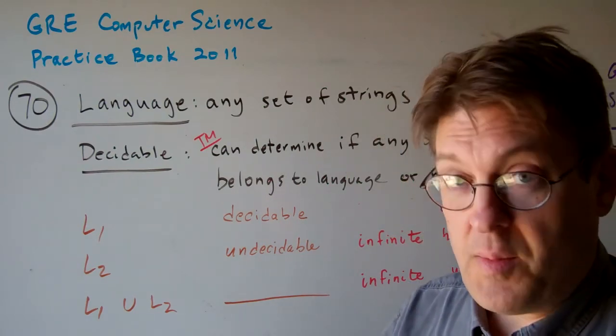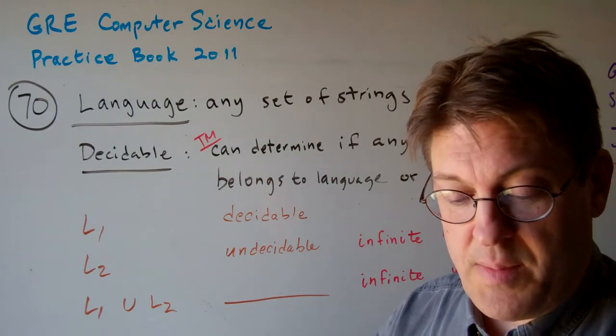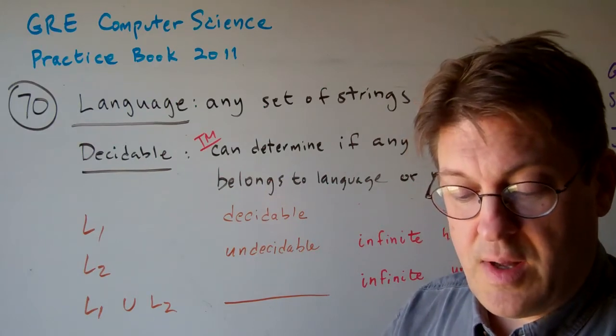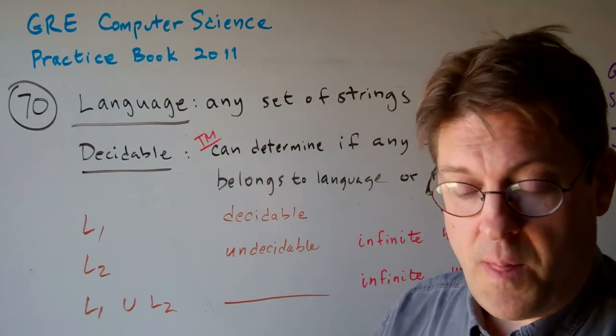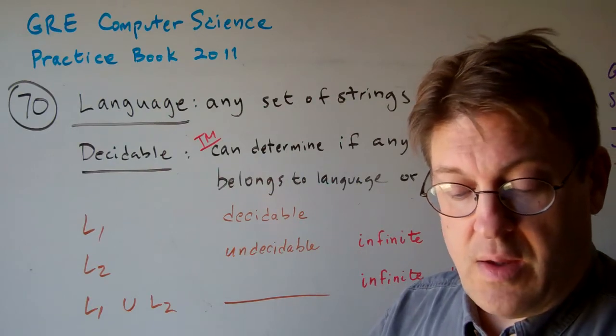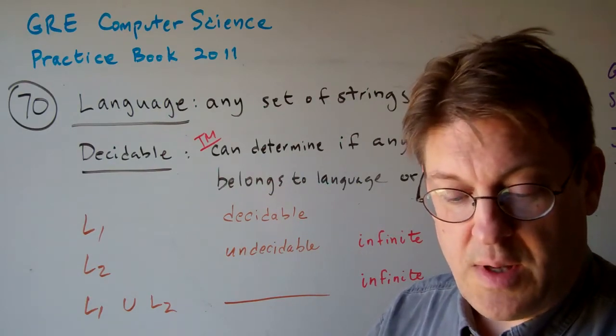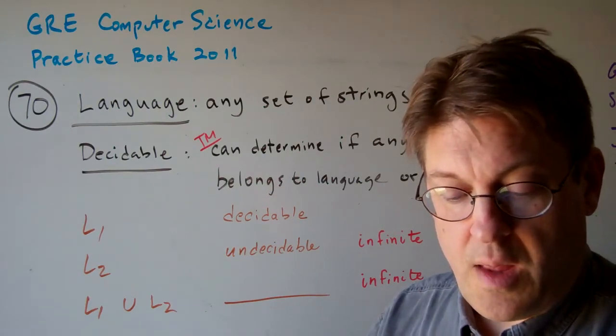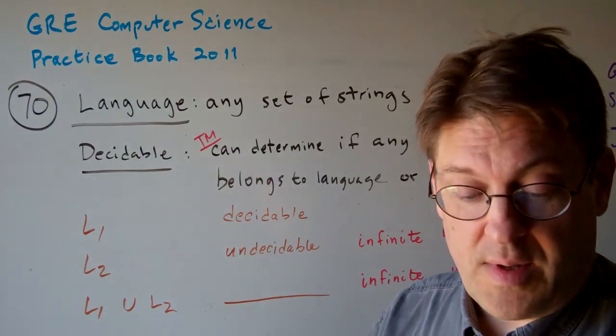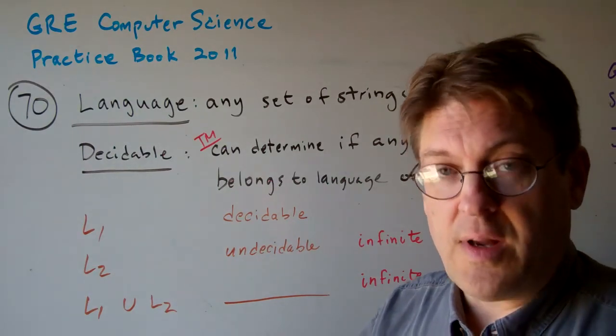A, possibly finite, possibly infinite, but definitely decidable. B, possibly finite, possibly infinite, but definitely undecidable. C, infinite but possibly decidable and possibly undecidable. D, infinite and decidable. E, infinite and undecidable.